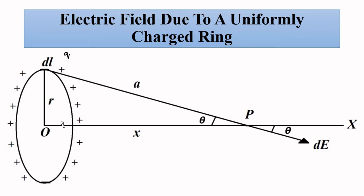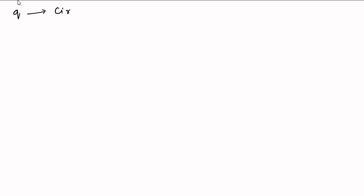We have to find the electric field at point P. For that, we take a small portion of the ring, find out the electric field generated due to that small portion, and then carry out calculations to find the total electric field generated by the ring-shaped structure. The total charge Q is uniformly distributed throughout the circumference of the ring, which is 2πr. So the charge per unit length is Q / 2πr.